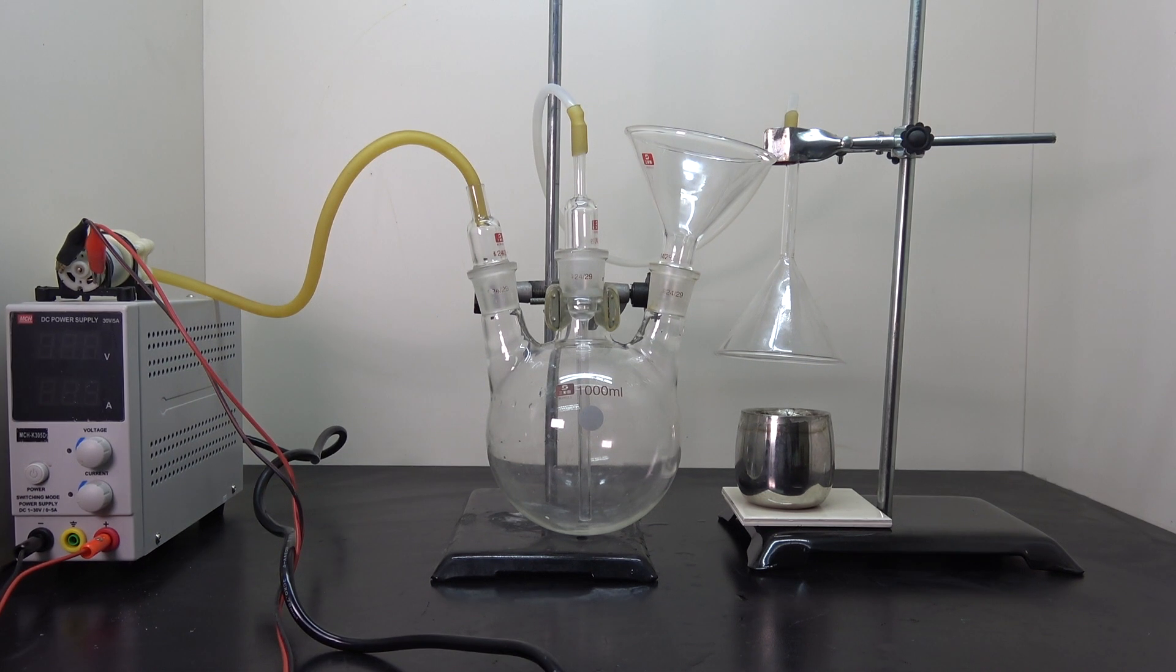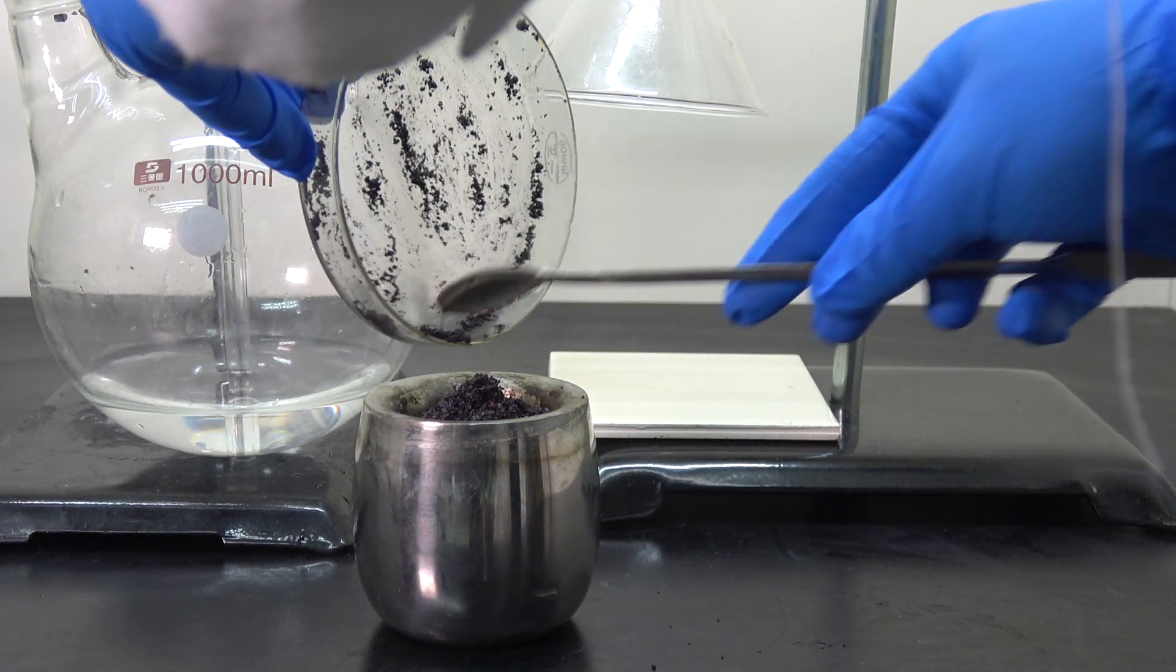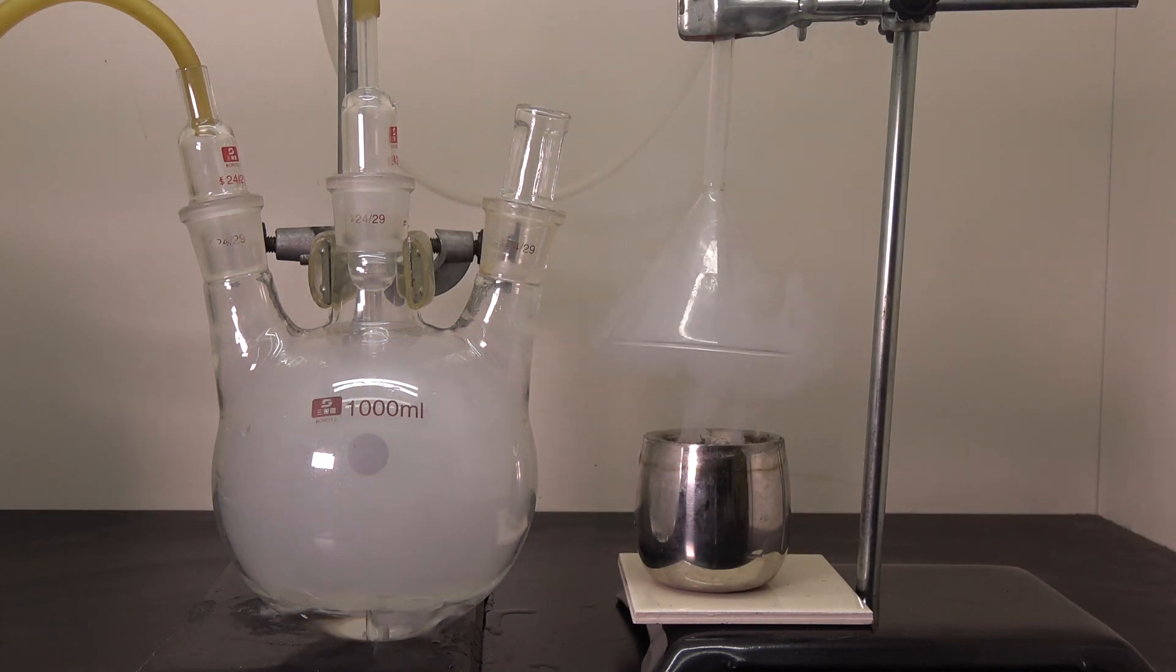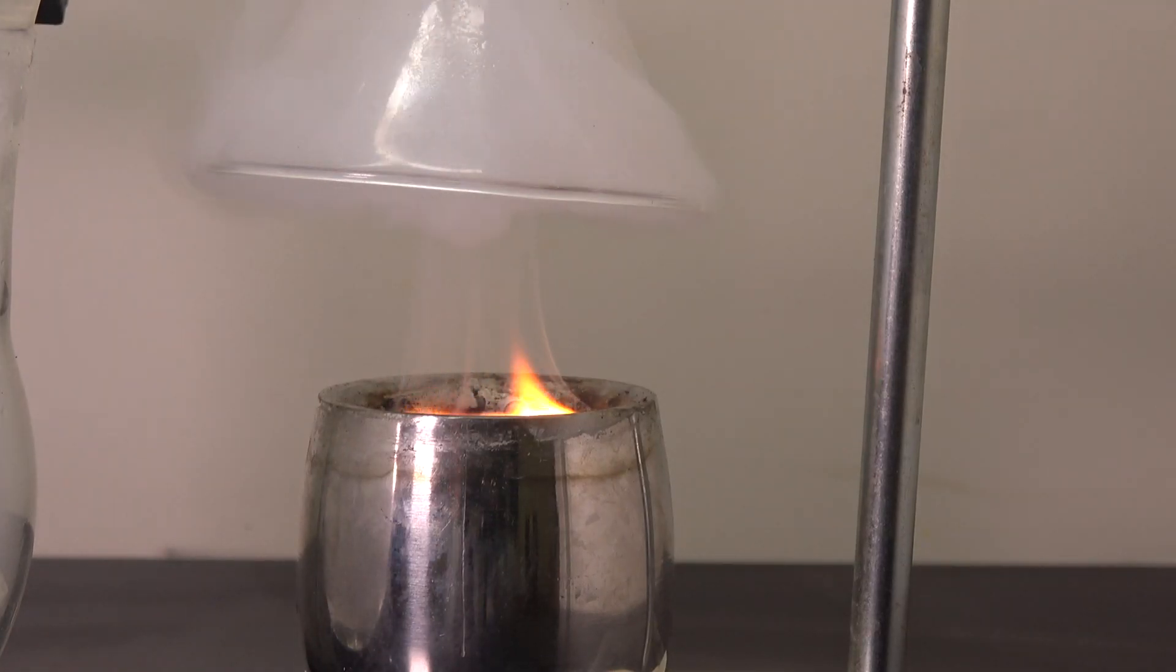In this video, we are going to make phosphoric acid by burning elemental phosphorus. Let's skip all the tedious parts this time and jump right into the important part.